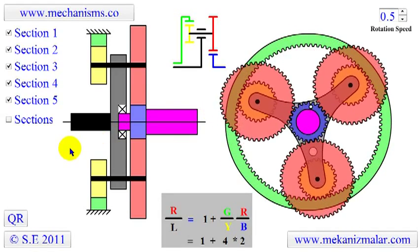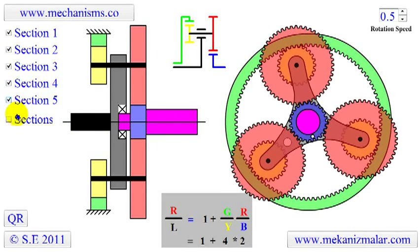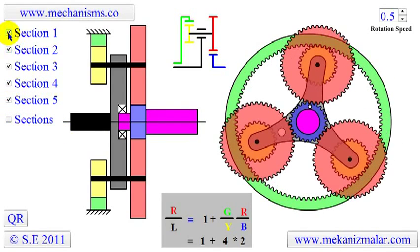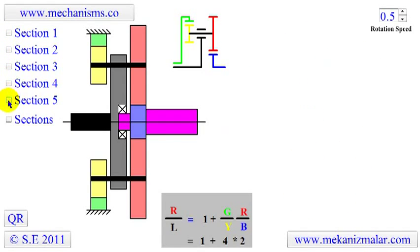Notice that this planetary gear is made up of five sections. First, let's turn off all the section selectors. Now, let's turn them on one section at a time.